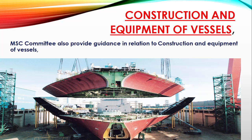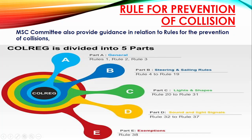The second function of the MSC is providing guidance on the construction and equipment of vessels. Whenever a ship is constructed, it must be made environmentally friendly. One example is the GBS — Goal-Based Standards — which the MSC committee has developed. Additionally, the MSC covers rules for the prevention of collision, reviewing regulations over time and introducing amendments where required.